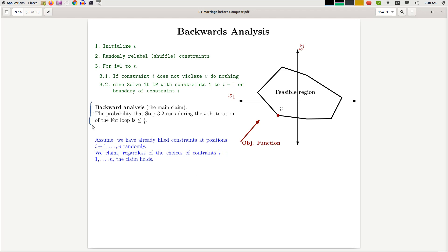And then I want to slightly strengthen this claim. So this claim holds, this claim says that in overall the probability of step 3.2 running is 2/i. Here I want to make it a bit stronger. I want to say that regardless of the choices that I've made for the constraints i+1 up to n, this claim holds.